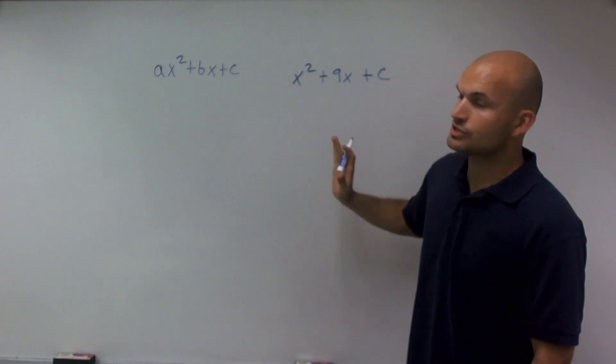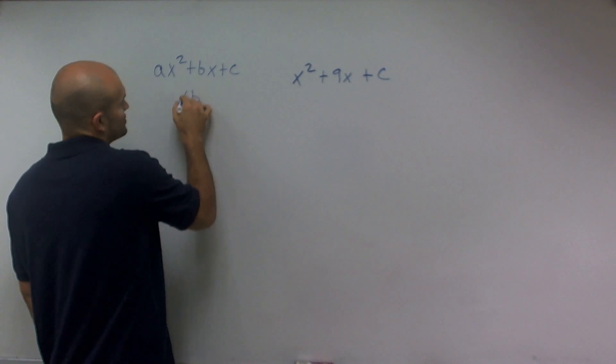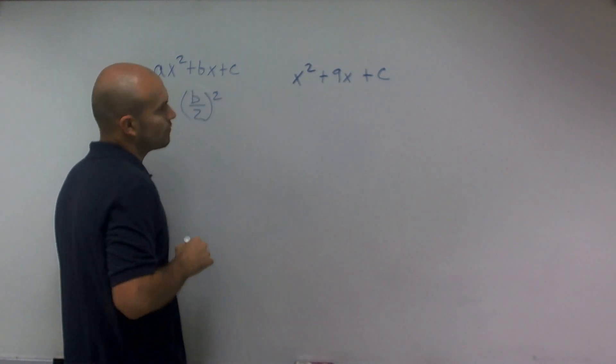Now, the next thing we're going to do when completing the square is we take a look at our b, we divide it by 2, and then we square it.